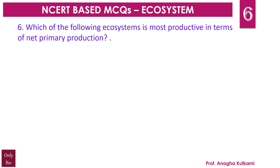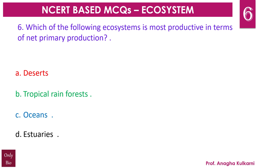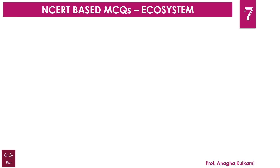Question number 6. Which of the following ecosystems is most productive in terms of net primary production? A. Deserts, B. Tropical rainforests, C. Oceans, D. Estuaries. The correct answer is B — Tropical rainforests. Comparing deserts, tropical rainforests, oceans, and estuaries, the most productive in terms of net primary production are the tropical rainforests.